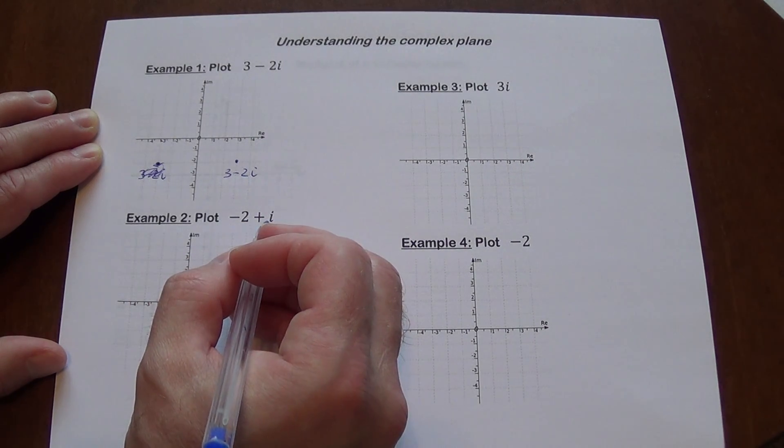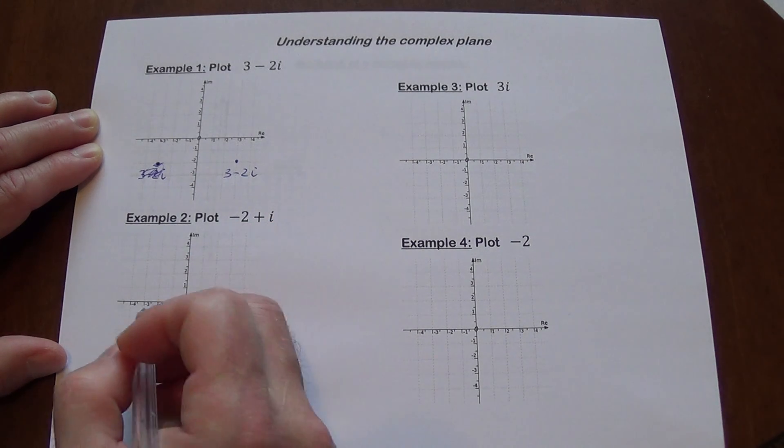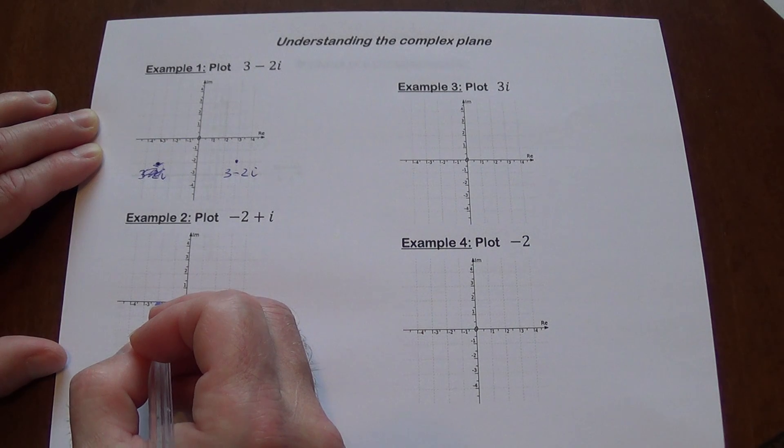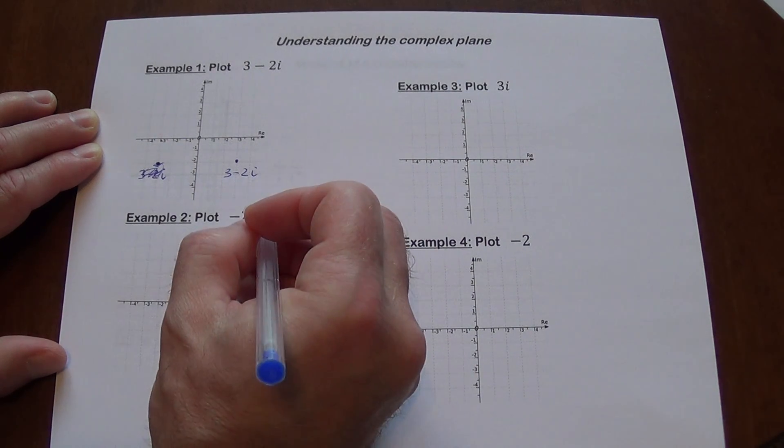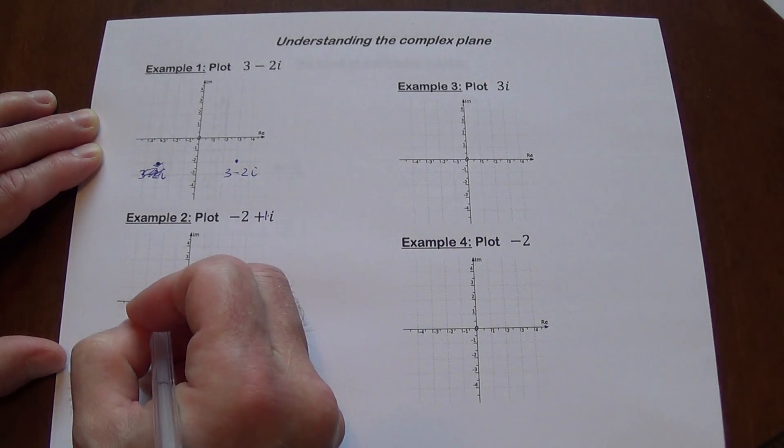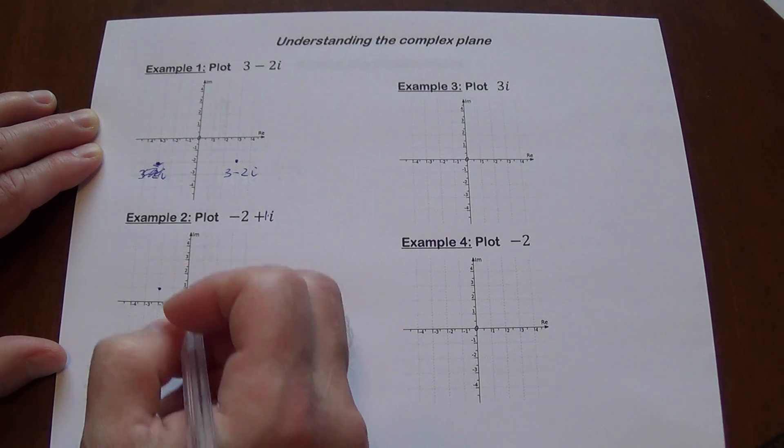Negative 2 plus i. So the real part is negative 2 on the horizontal axis. Plus i means plus 1i, so I'm going to go up 1. This is my number.